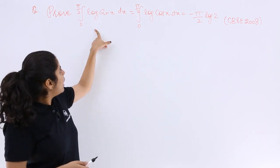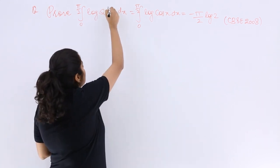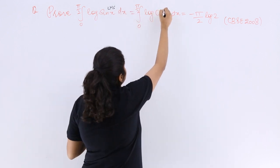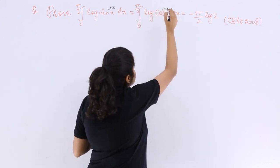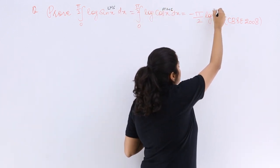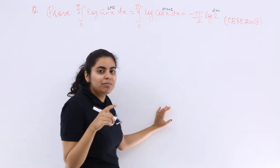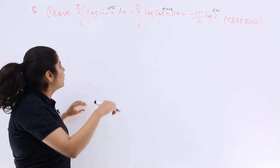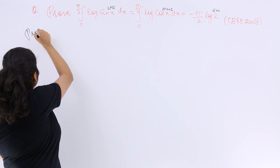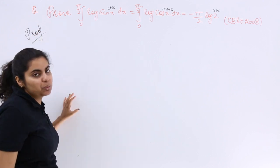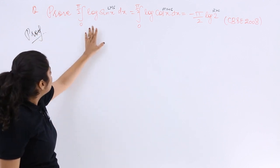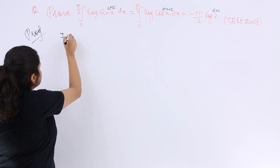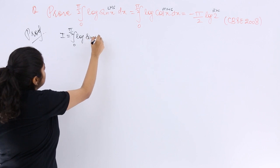First of all, you have left hand side, I will be naming these like LHS, MHS which is middle hand side, and this I will be naming as RHS. So please keep it in mind while I solve the question. Let me write proof because this time I cannot write solution, it is a prove that question. Let's say I is equal to integral 0 to π/2 log sin x dx.